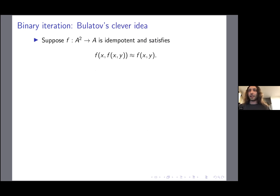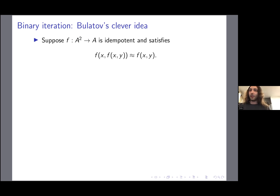Define T∘₂ⁿ by composing on the second argument: T(x, T(x, ... T(x, y)...)). Then exactly analogously to the unary case, define T∞(x,y) as the limit of this iteration, giving T∞(x, T∞(x,y)) = T∞(x,y). Usually people stop here. Now here is the clever part — an idea from one of Andrei Boulotov's papers. Suppose you start with an idempotent binary function, having already used unary iteration to reduce to studying only idempotent algebras.